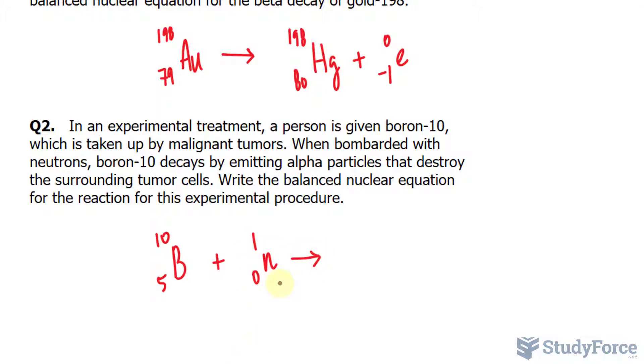this breaks down into an alpha particle. You can write down alpha or you can write down helium, it's up to you. Helium has an atomic mass of 4 and 2 protons plus,